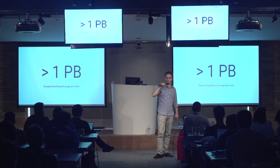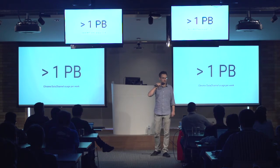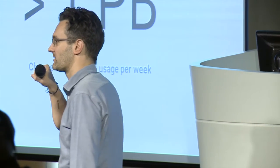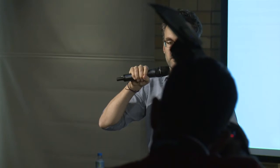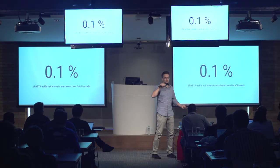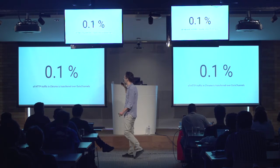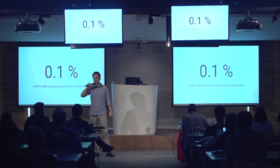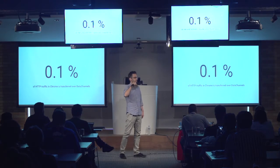It's not only audio and video communication — there's the data channel. What we see in Chrome for the data channel is one petabyte of data transferred per week, for various use cases including content delivery networks and peer-to-peer content sharing. This is only 0.1% of all Chrome traffic, but it's been rapidly growing — at the beginning of this year it was 0.05%, and now we've doubled it.